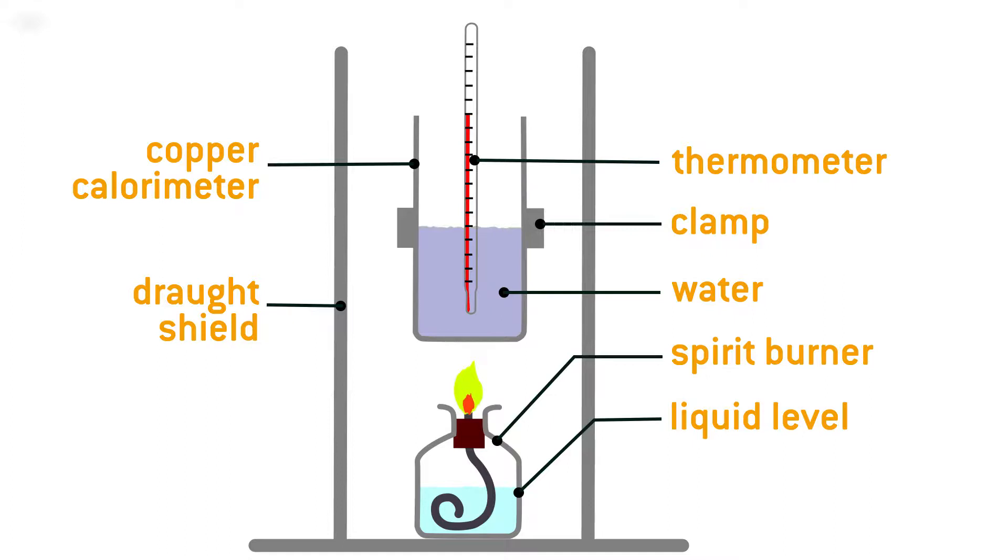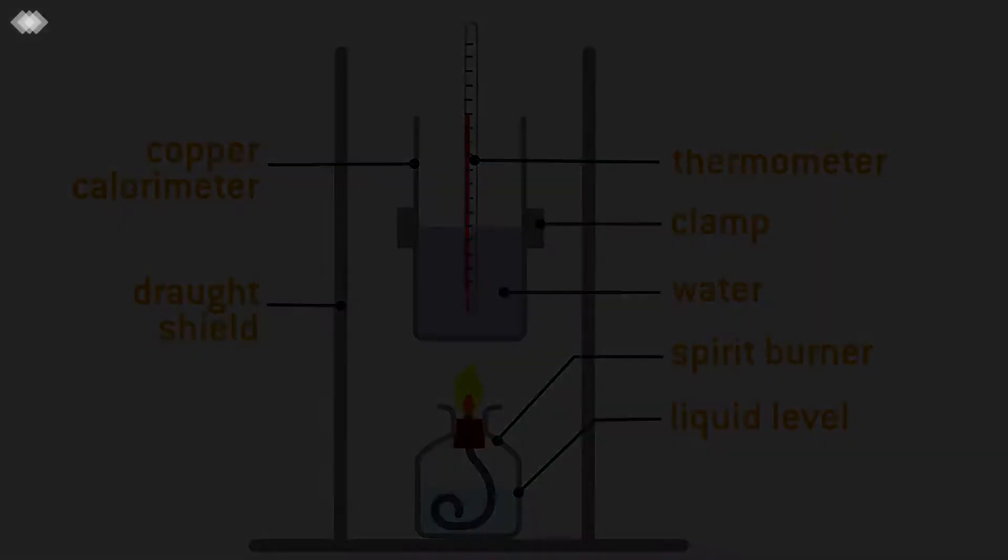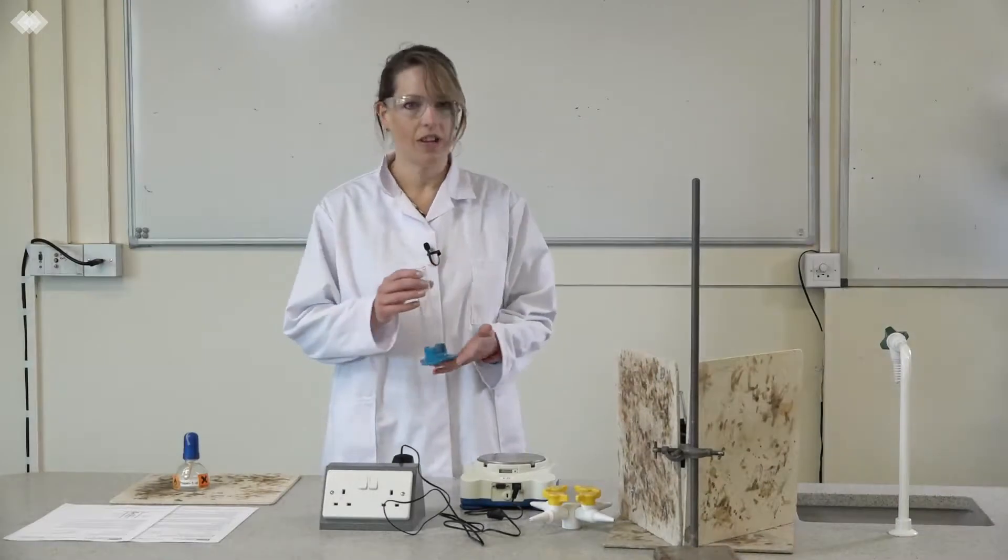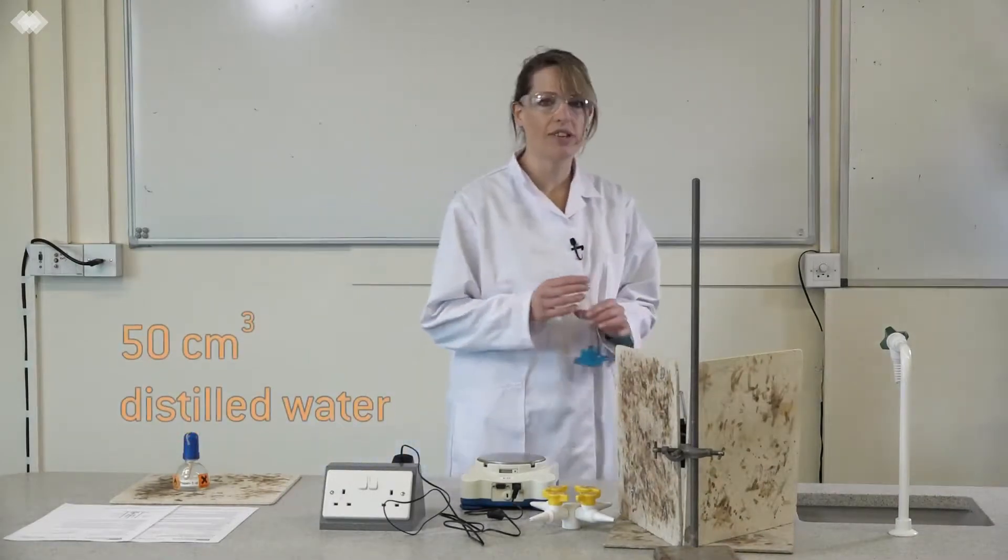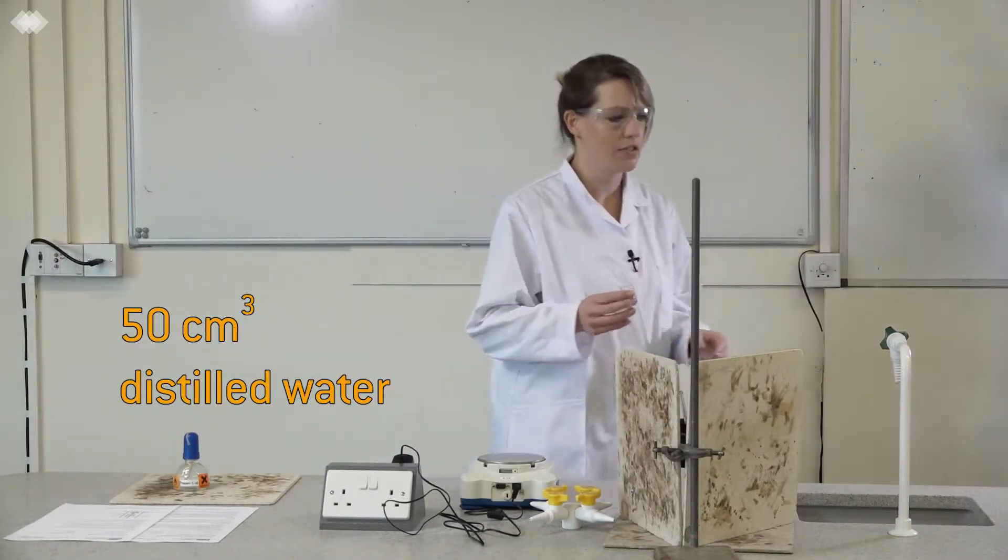To measure the enthalpy change of combustion, set up the equipment as shown here. The first thing we need to do is to measure 50 cubic centimeters of water into the measuring cylinder.